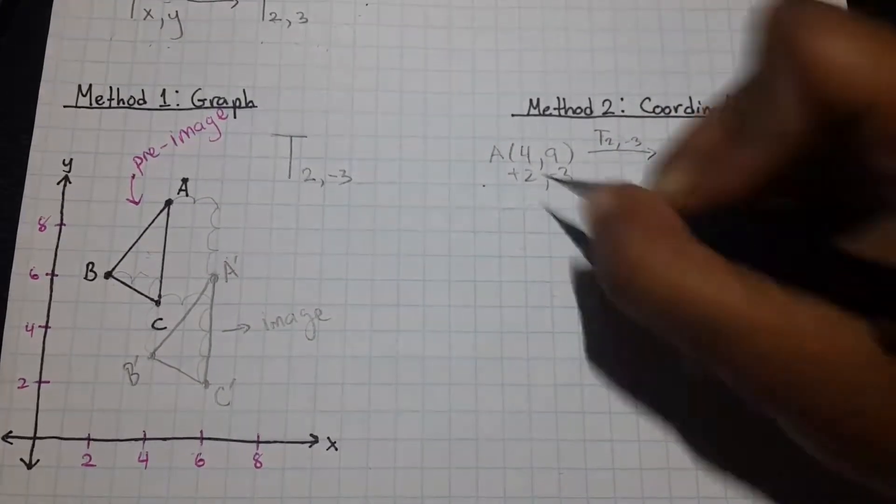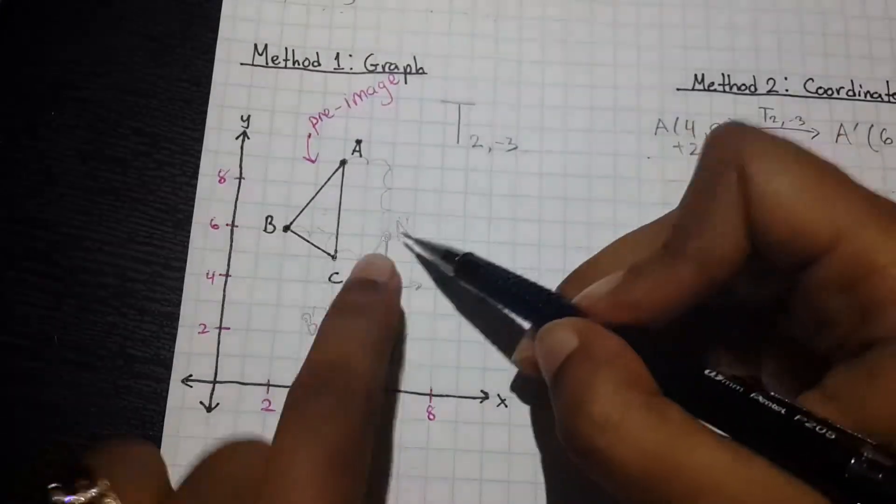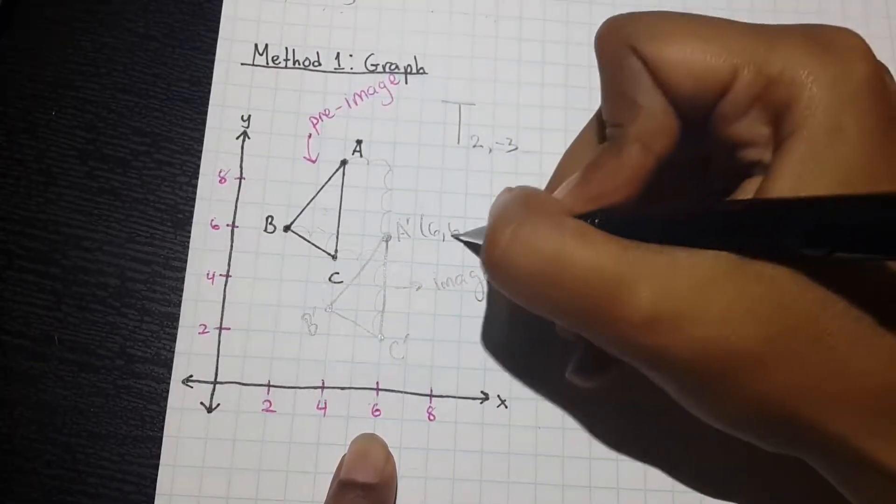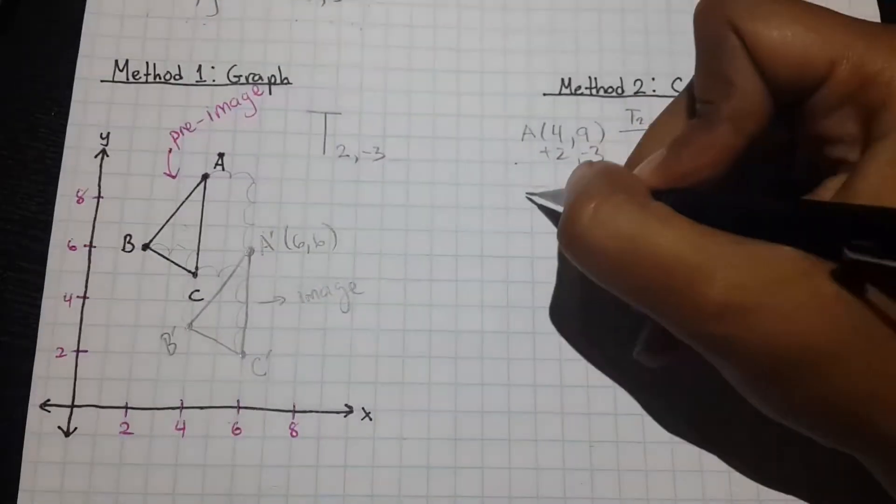Four plus two, that's going to give us six. Nine minus three, that's going to give us six. And we see that our coordinate point here for A prime is (6,6). So, we are definitely in a good position.